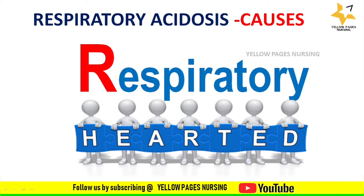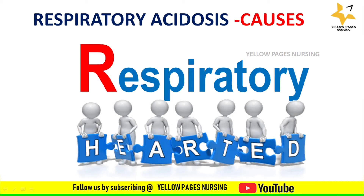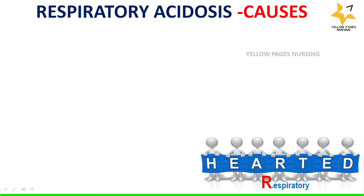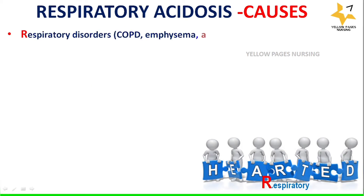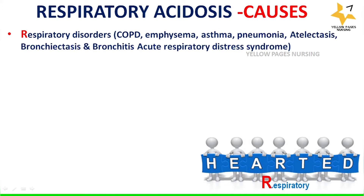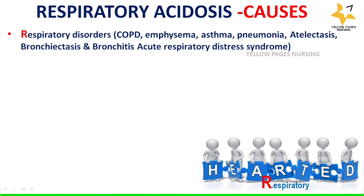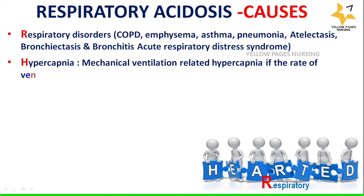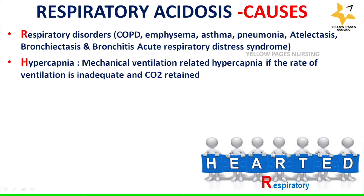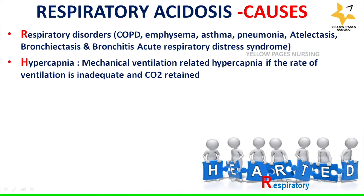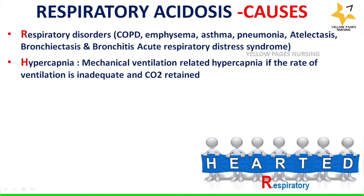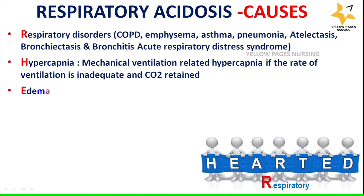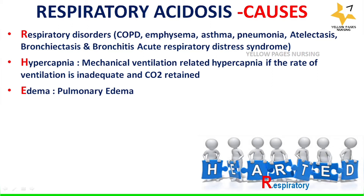The causes of respiratory acidosis are categorized under the mnemonic R-HEARTACHE. R stands for respiratory disorders like COPD, emphysema, asthma, pneumonia, atelectasis, bronchitis, and acute respiratory distress syndrome. H stands for hypercapnia — mechanical ventilation-related hypercapnia where inadequate ventilation retains CO2. Hypercapnia, also known as hypercarbia, is an abnormally elevated carbon dioxide level in the blood. E stands for edema — pulmonary edema, excess fluid in the lungs making it difficult to breathe.